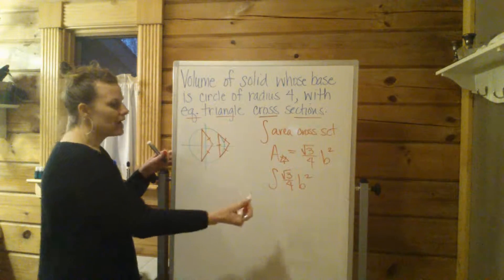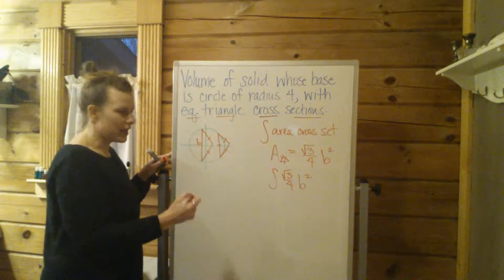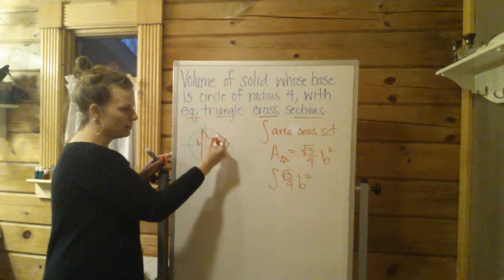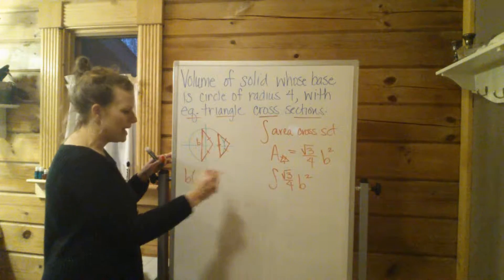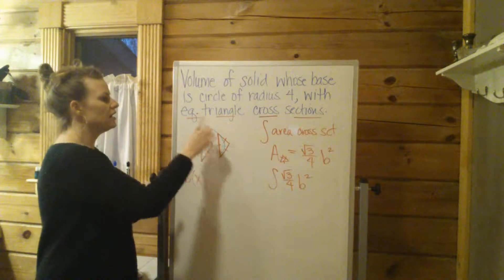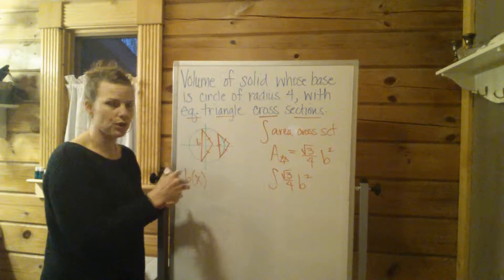So the way we're going to do this now we have to represent this b which is the base of that triangle right here. Goes from here to here. Over this one goes from the top of the circle to the bottom of the circle. We have to represent that base in terms of x. So in terms of the graph of this equation or the function of this circle if that makes sense.